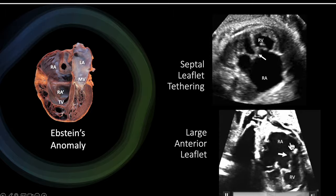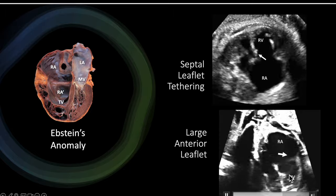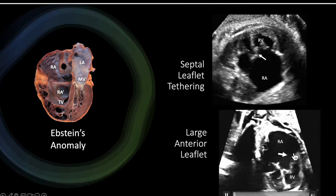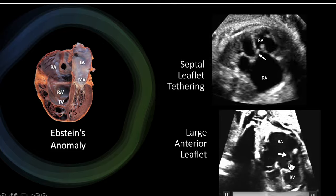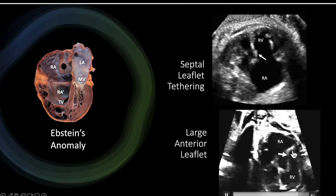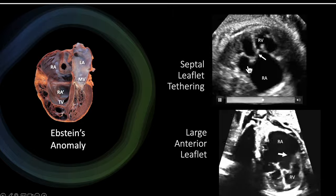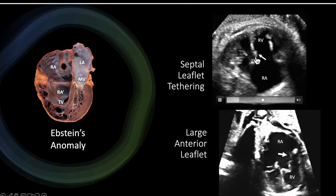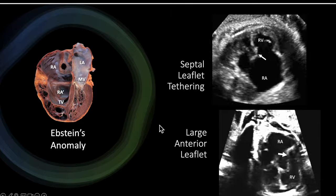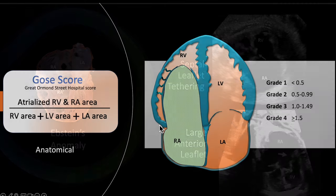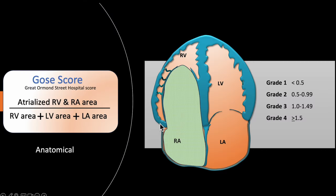To compensate and reach the coaptation point, there is a large anterior leaflet. So the large anterior leaflet and septal attachment are hallmarks of Ebstein anomaly.